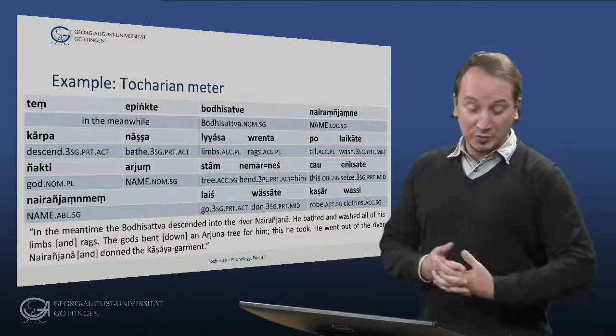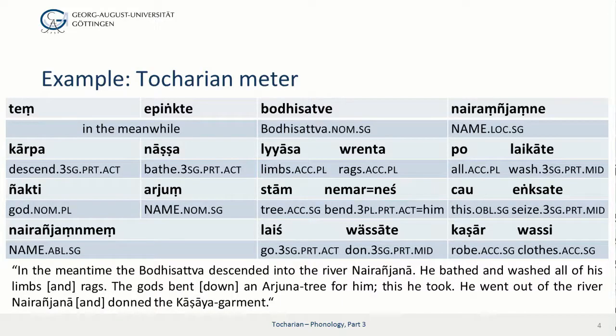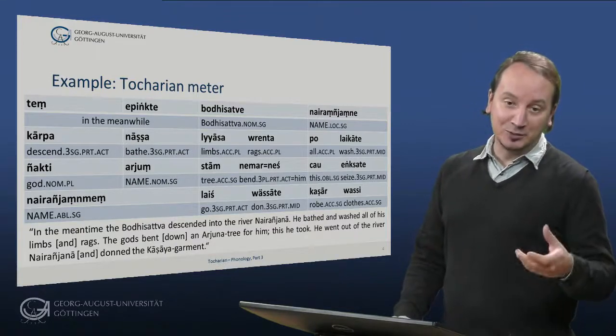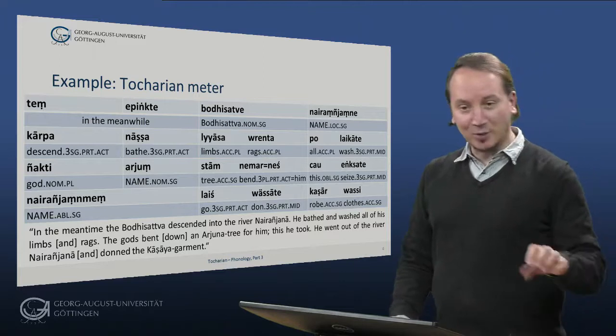So I first read the translation to you. In the meantime the Bodhisattva descended into the river Nairanjana. He bathed and washed all his limbs and rags. The gods bent down an Arjuna tree for him and this he took. He went out of the river Nairanjana and donned the kashaya garment, and the kashaya garment is the traditional orange Buddhist garment. After this the group of gods point out the Buddha as the best of all sages and Nanda and Nandabala will offer the meal to him and here I stop because of spoiler alert.